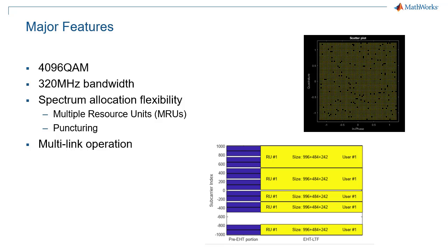While the focus of 802.11 AX was high efficiency, 802.11 BE takes us back to the tradition of increasing the data rate. The first two features fall squarely in that category, with 4096 QAM being added and a doubling of the bandwidth to 320 MHz, something that becomes possible in the 6 GHz band.